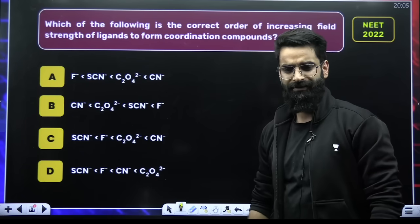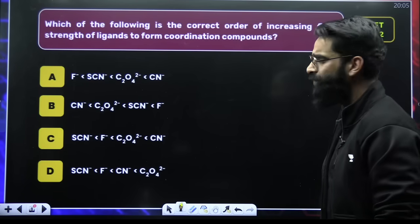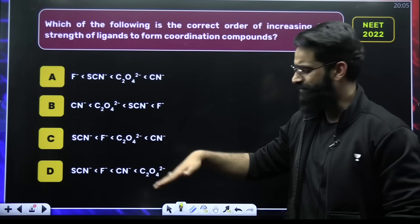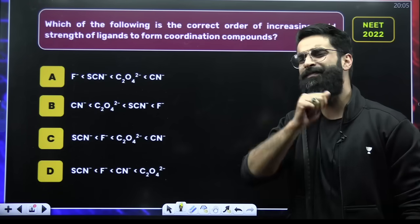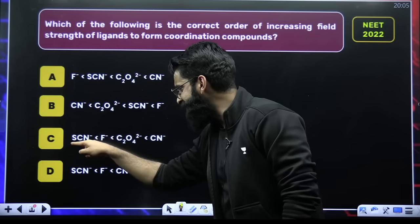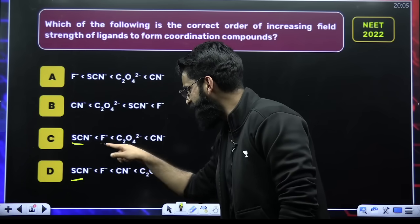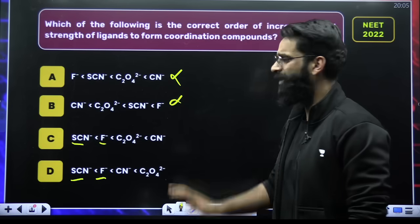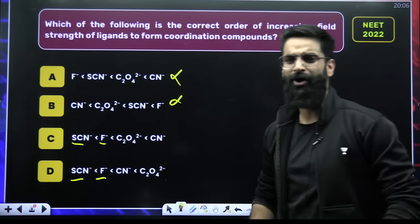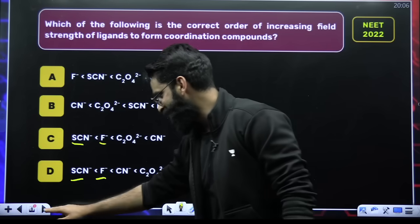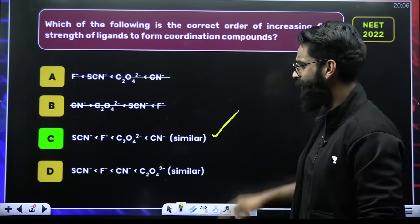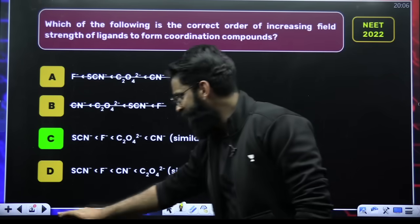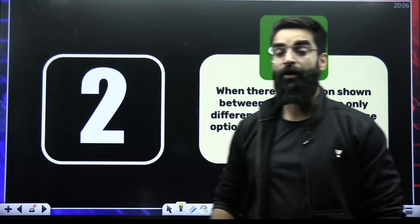Similarly, look at this particular question — the one asked in the 2022 examination. I am just looking at the options. Select the repeated ones: SCN⁻ appears twice, F⁻ appears twice. Here nothing is repeated in the remaining options. So A and B are not going to be your answers. The correct answer is either going to be C or D — that's my promise to you. In this particular question, the correct answer is option C.